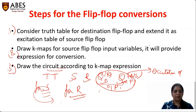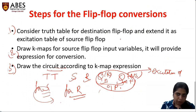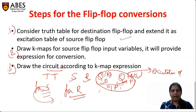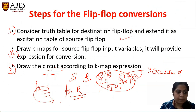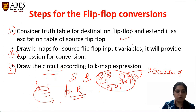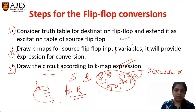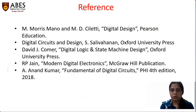So these 3 steps are mandatory in converting any flip-flop to another flip-flop. First, you have to make the truth table for the destination flip-flop and with its help make the extended conversion table of the source flip-flop. After that, you have to make the K-maps for the source variables. Then finally, by deriving the expression from the K-map, you draw the circuit, which is the final result of the conversion. These are the references you can refer to for your university exams.